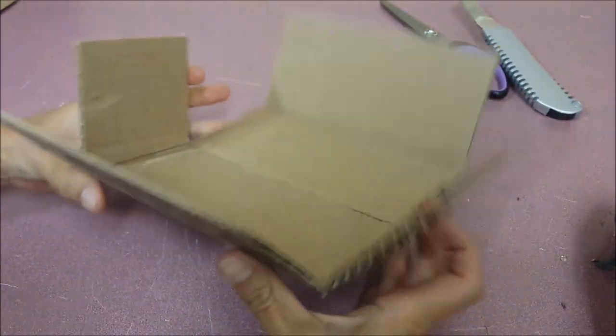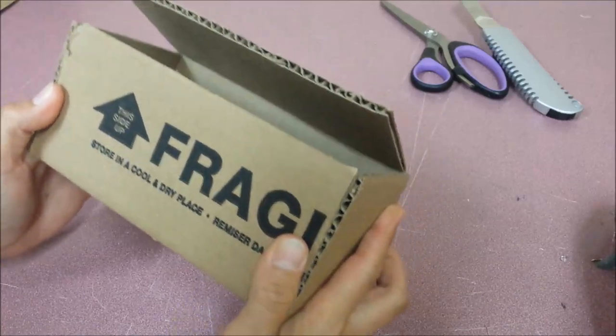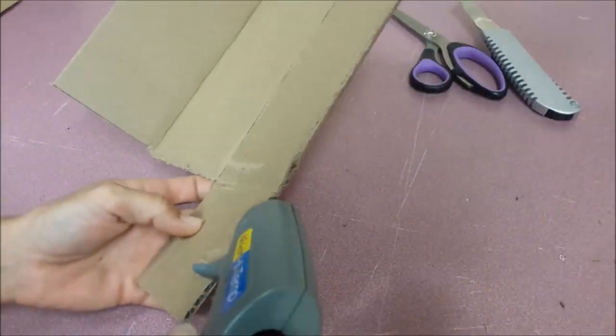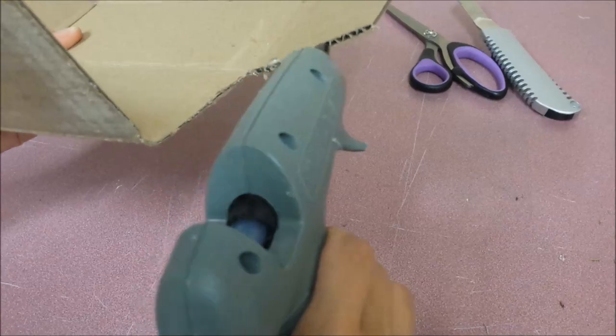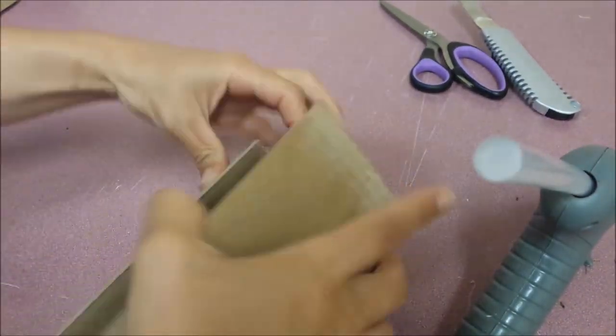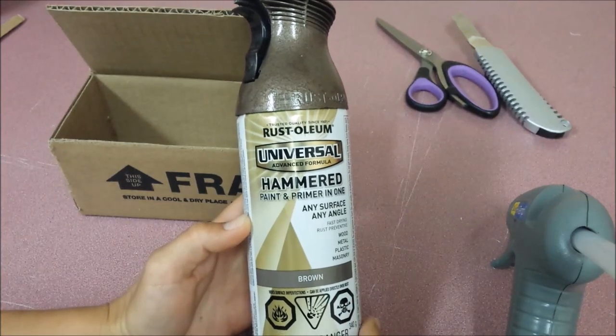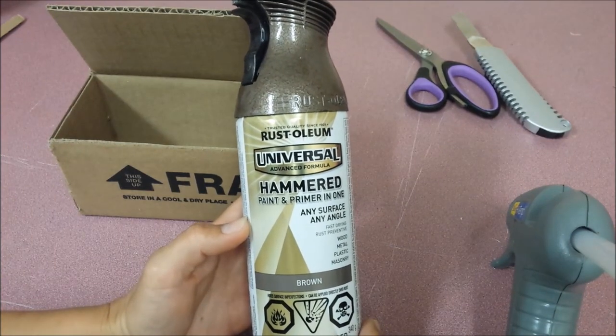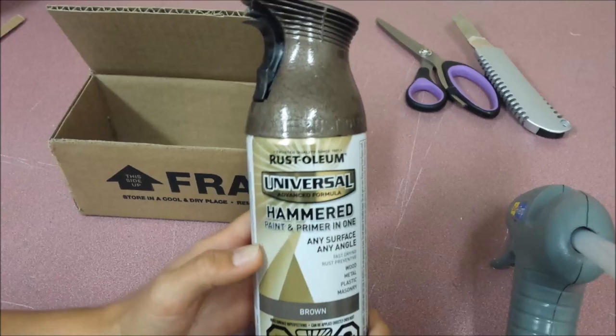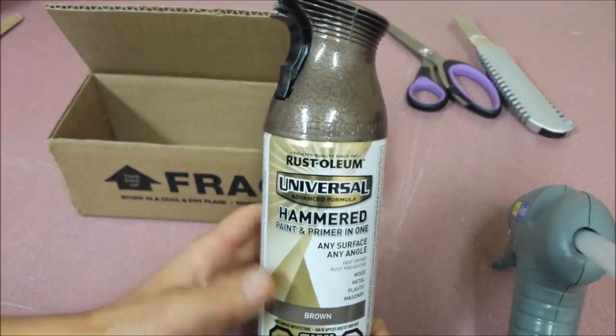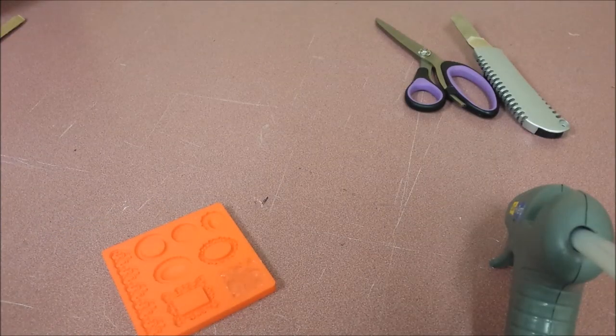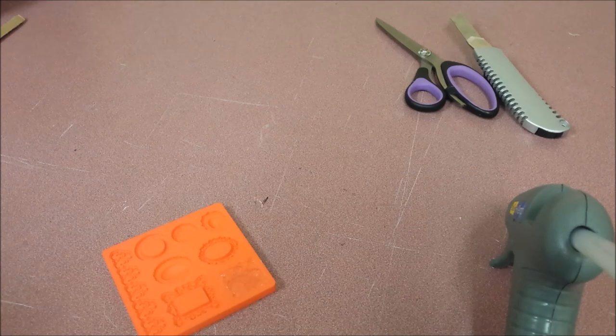I'm gonna start by doing the four sides together here. I'm gonna use brown spray paint and I'm gonna spray the inside and outside. While my treasure chest is drying, I'm gonna use this mold.